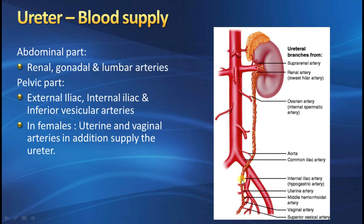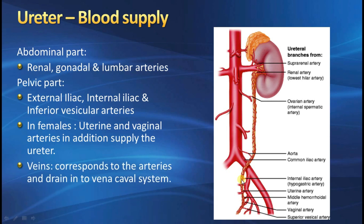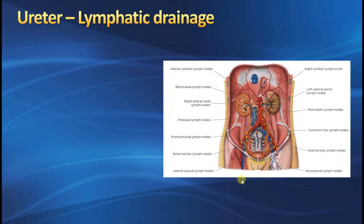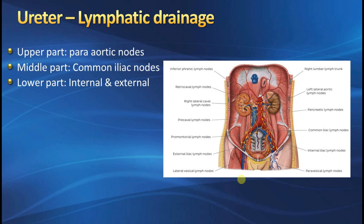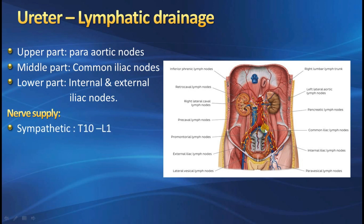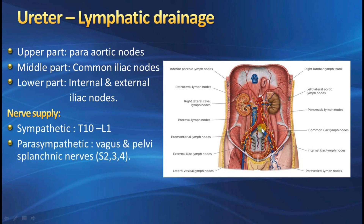Lymphatics of the ureter follow the course of the vessels: the abdominal part drains into para-aortic nodes, and the pelvic part drains into common, external, and internal iliac nodes. Nerve supply: sympathetics from T10 to L1 via the hypogastric plexus; parasympathetics by the vagus and pelvic splanchnic nerves S2, S3, and S4.